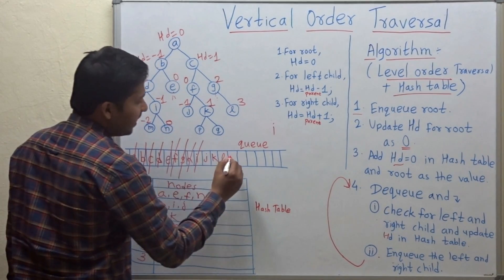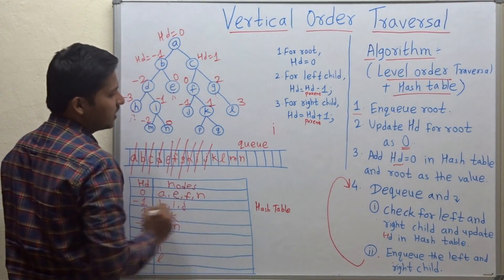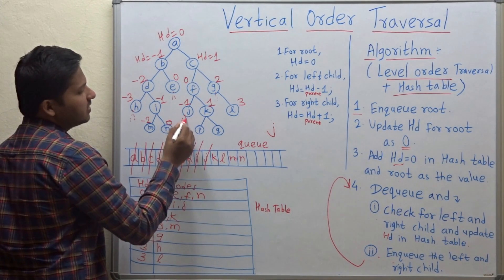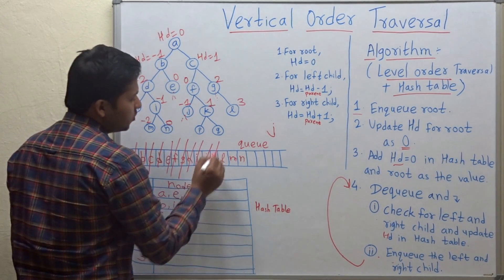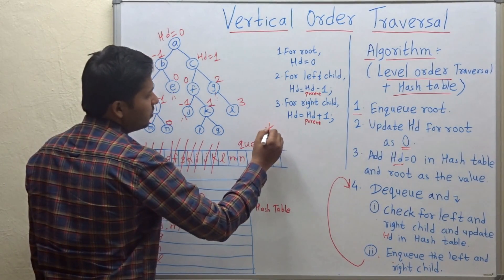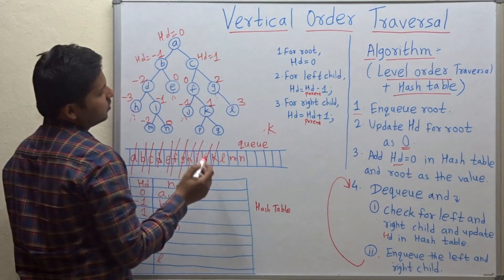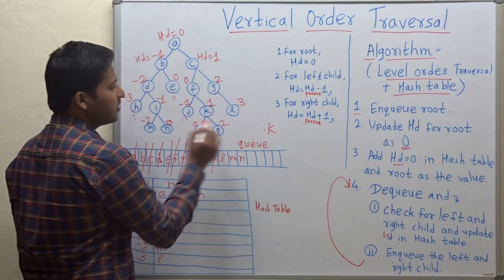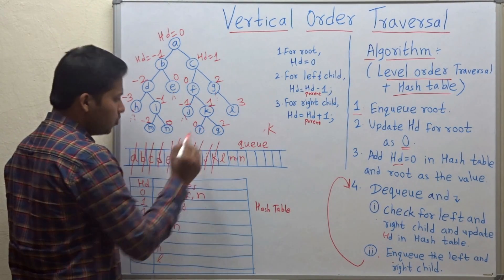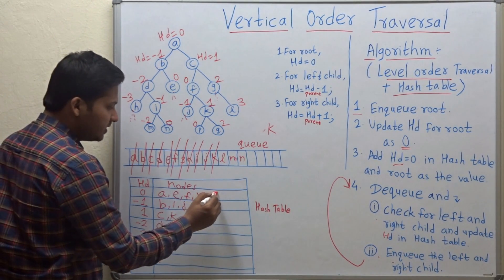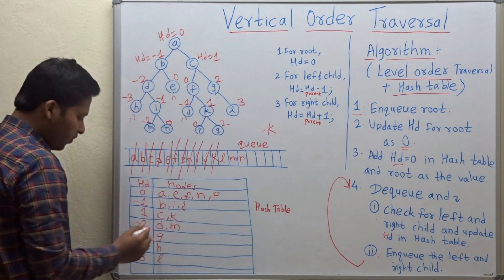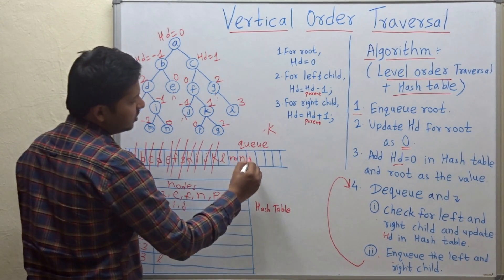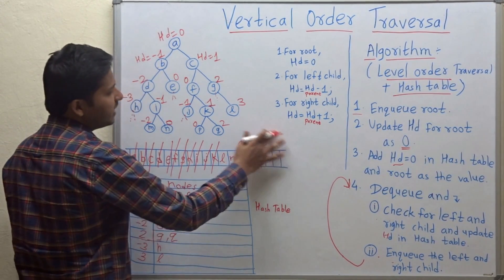Dequeue j — it has no left or right child, nothing to do. Dequeue k — it has left and right children. Hd values: 1 minus 1 = 0 and 1 plus 1 = 2. Add p to key 0 and q to key 2 in the hash table. Enqueue p and q.